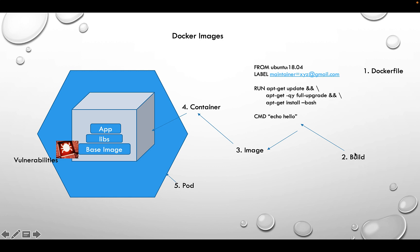The second step is to build the image. There are commands to build a Dockerfile — you say `docker build` in the same folder as the Dockerfile, and what comes out is an image. If you do `docker images` you'll see all those images. Then you do `docker run` with the image name and the container will run that image.